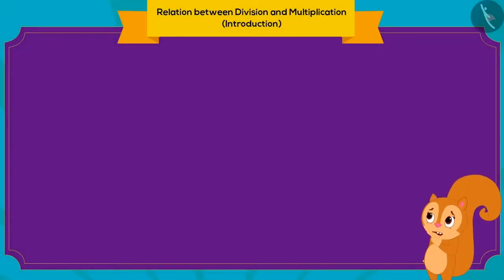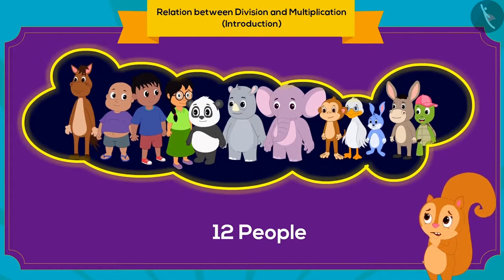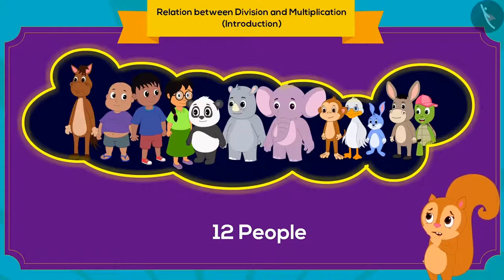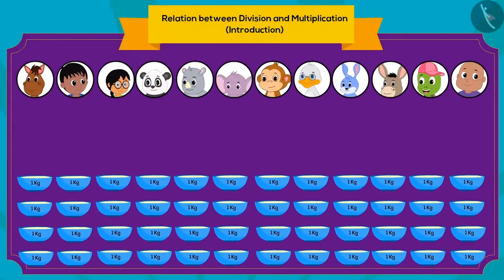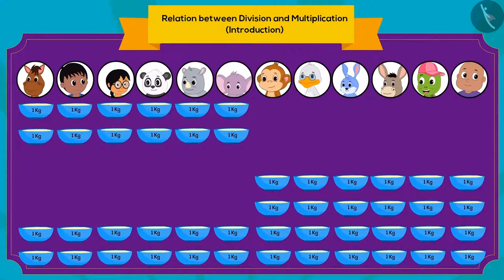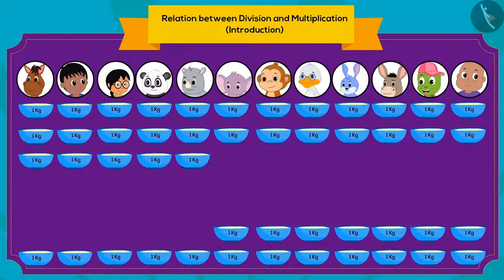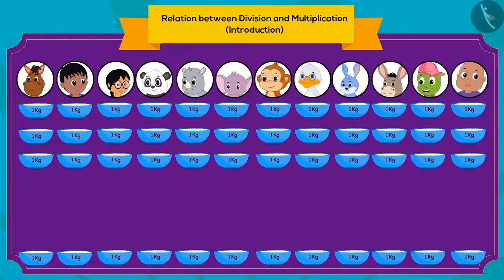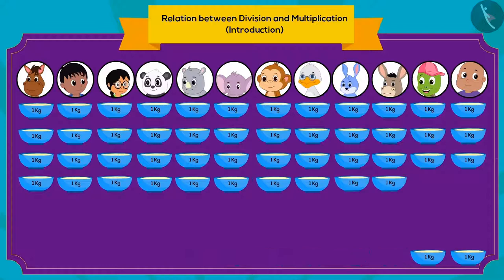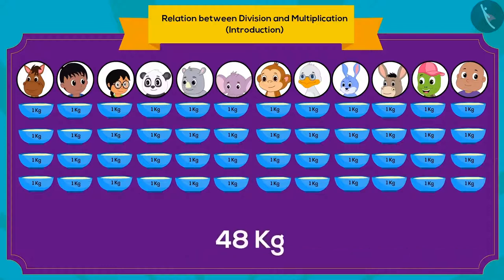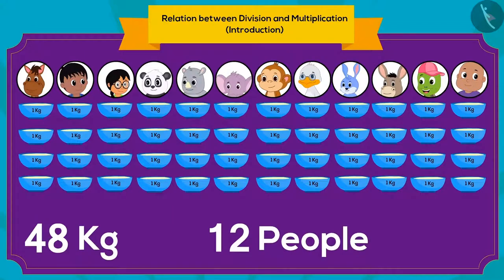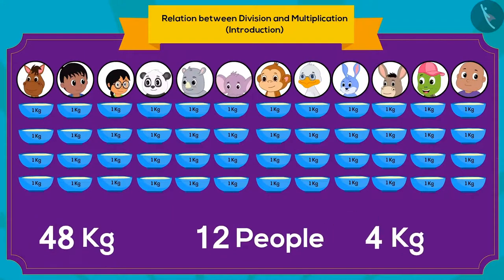Chanda needed to divide that kheer among 12 people in the village. Can you tell how much kheer each villager would get? Chanda will first give 2 kg of kheer to each individual, then 1 kg more, and finally 1 more kg. This way, Chanda divided 48 kg of kheer equally among 12 people, and each person received 4 kg of kheer.